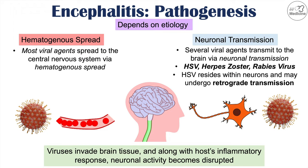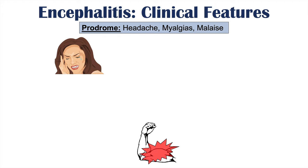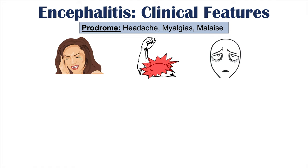Looking at the clinical features of encephalitis, there is often a prodrome before full onset. Before the condition fully develops, patients experience headache, myalgias (muscle aches and pains), and malaise — a feeling of generally being unwell. These are oftentimes due to one of the viral infections discussed earlier.